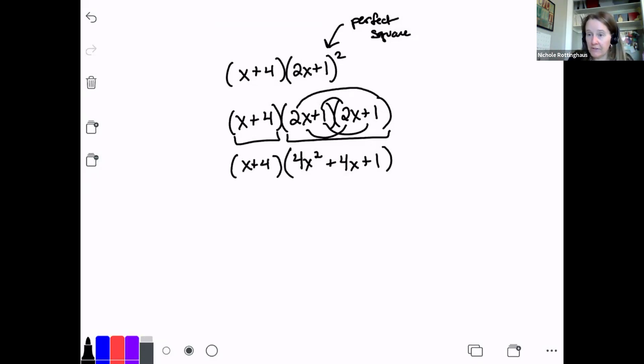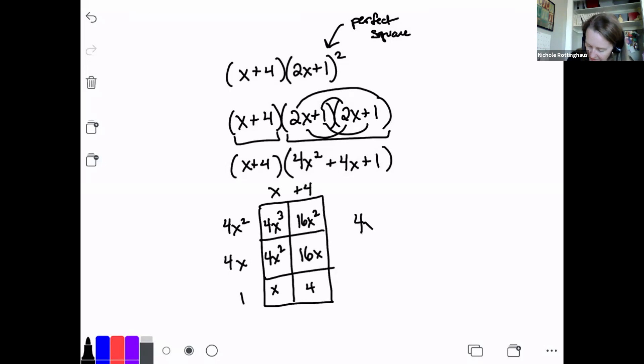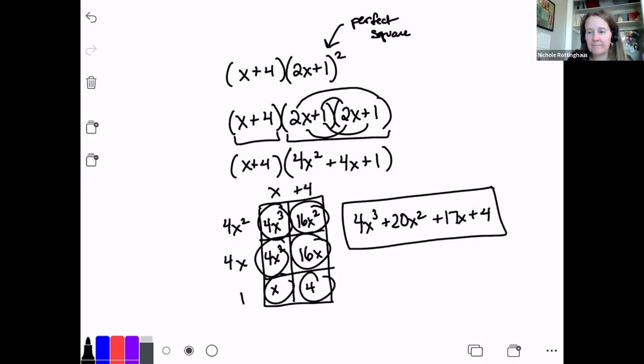I like the area models. Let's do that one. So I have x plus 4, 4x squared, 4x, 1. So this is 4x to the third, 16x squared, 4x squared, 16x, x, and 4. Everything was plus. So 4x to the third plus 20x squared, then 17x plus 4. And I'm done.